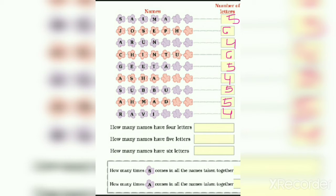How many names have 4 letters? Let us see. 1, 2, 3. 3 names have 4 letters.